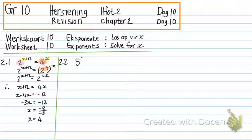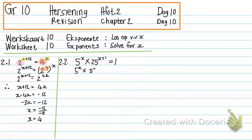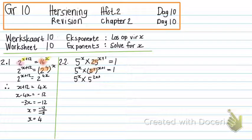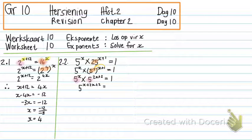Number 2.2: 5 to the power of X times 25 to the power of X plus 1 is equal to 1. I substitute 25 with 5 squared to the power of X plus 1. I multiply the 2 in with X and 1, so it becomes 5 to the power of 2X plus 2. Now I have the same bases. When the bases are the same, I can add the exponents. I need to get the right side also as 5 to some power. Anything to the power of 0 is 1, so I substitute 1 with 5 to the power of 0.